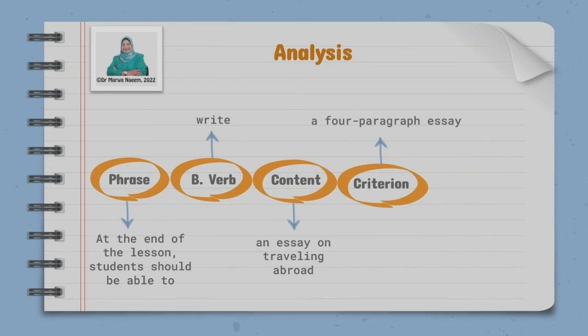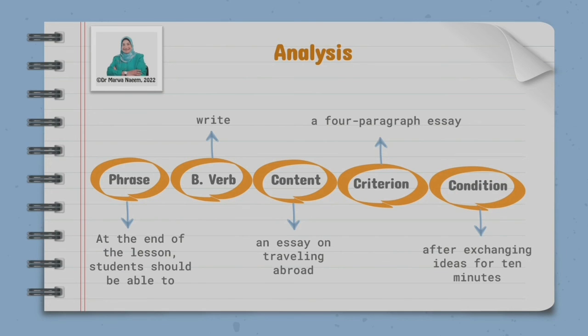Well, the criterion of performance is a four-paragraph essay. This essay should not be less than four paragraphs. This means that the quantity of writing is important in this objective. Because if a student wrote, for instance, a single paragraph, two paragraphs, three paragraphs, this means that my objective is not achieved. He or she must at least write four paragraphs in the essay. And then the condition of performance: after exchanging ideas for 10 minutes. So before writing, a student should exchange ideas with the teacher, with peer students, and start writing the essay.